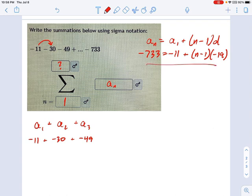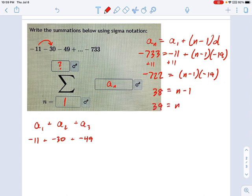So now we're going to solve this equation right here. I'm going to add 11 to both sides. That's going to get me to negative 722 equals n minus 1 times negative 19. Calculator time. Negative 722 divided by negative 19 gives me 38 equals n minus 1. That means 39 equals n.